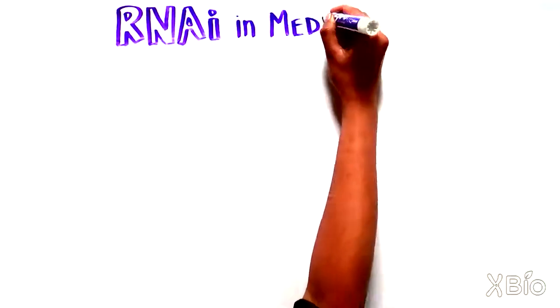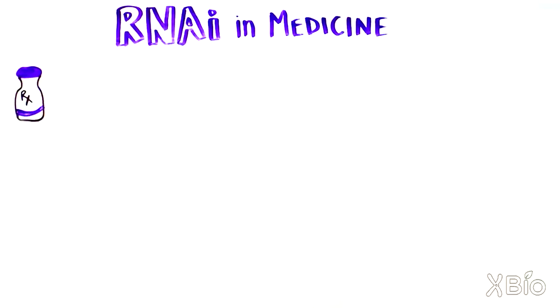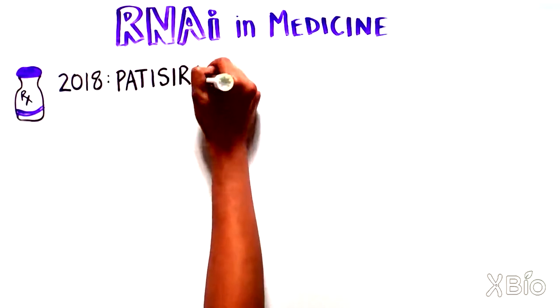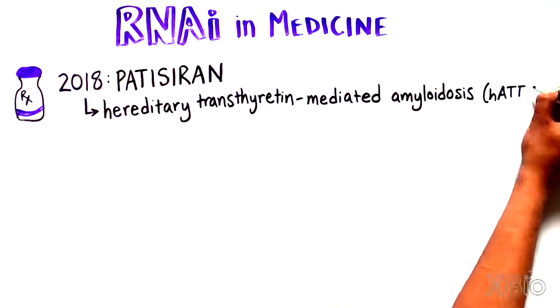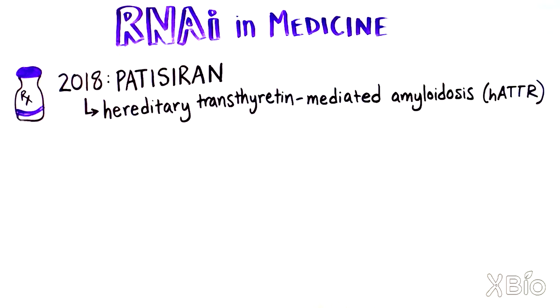RNAi also has found its way into medicine. In 2018, patisiran, an siRNA molecule, was approved for a disease of the nervous system caused by hereditary transthyretin-mediated amyloidosis.